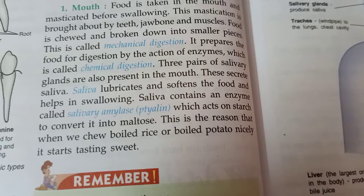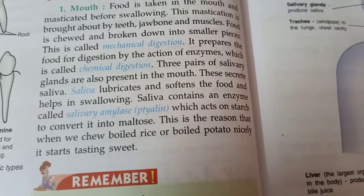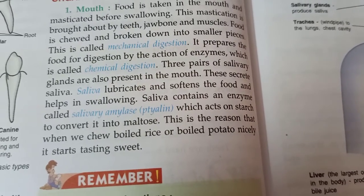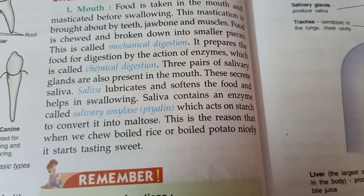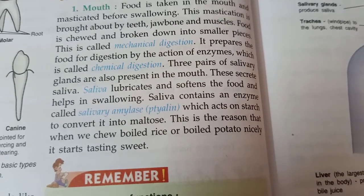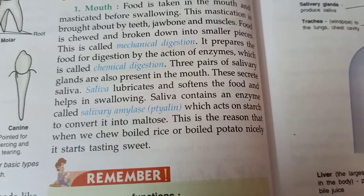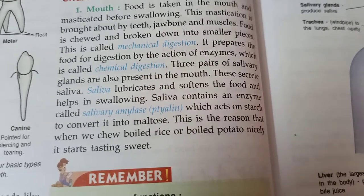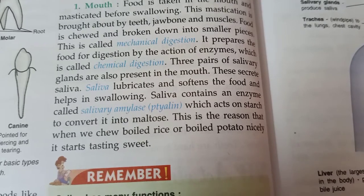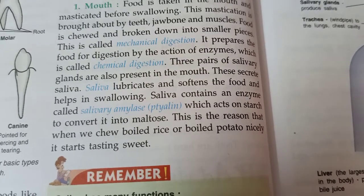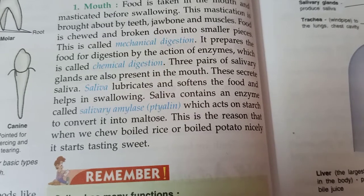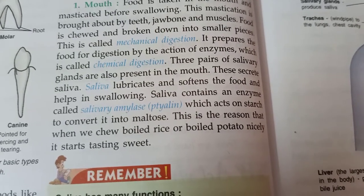Breaking down food into smaller pieces is called mechanical digestion. It prepares the food for digestion by the action of enzymes, which is called chemical digestion. So breaking food into smaller pieces is mechanical digestion, and when food gets digested with the help of enzymes, that is known as chemical digestion.